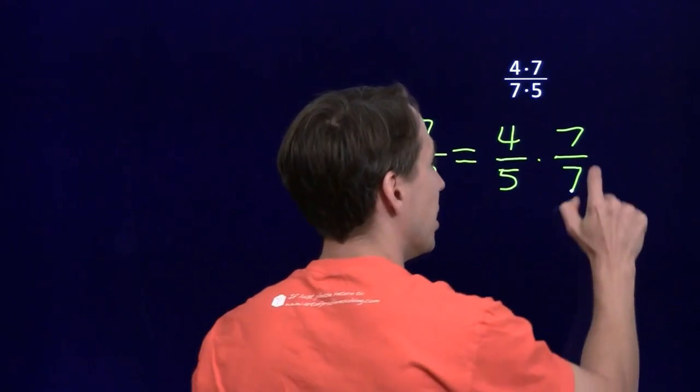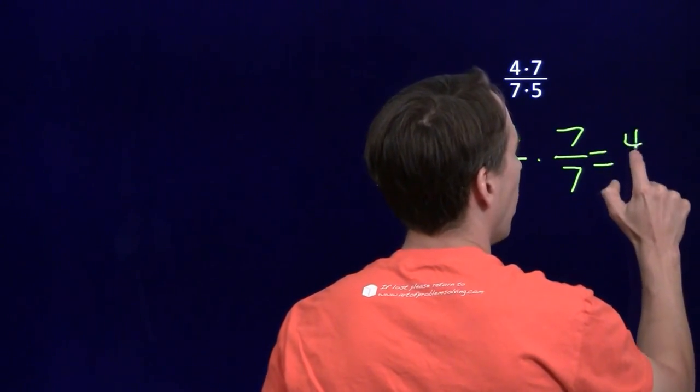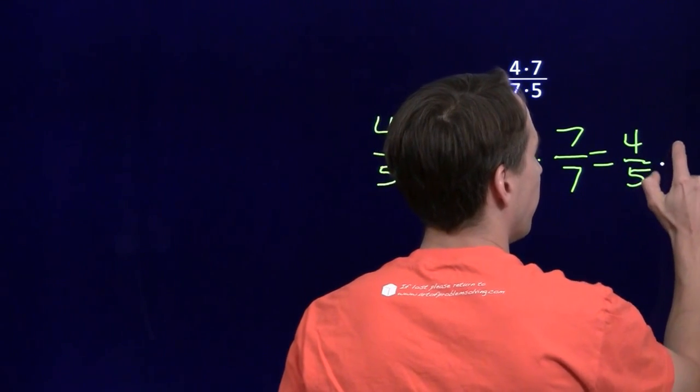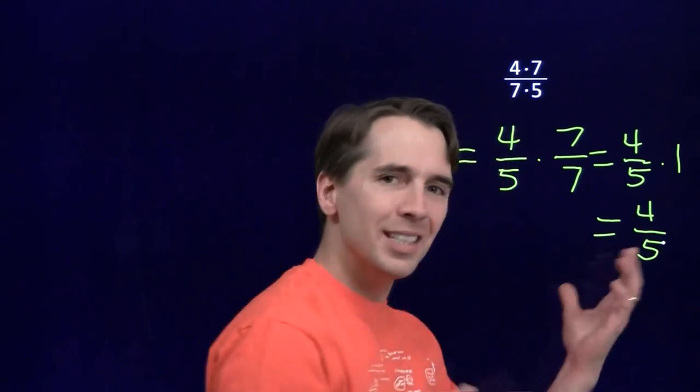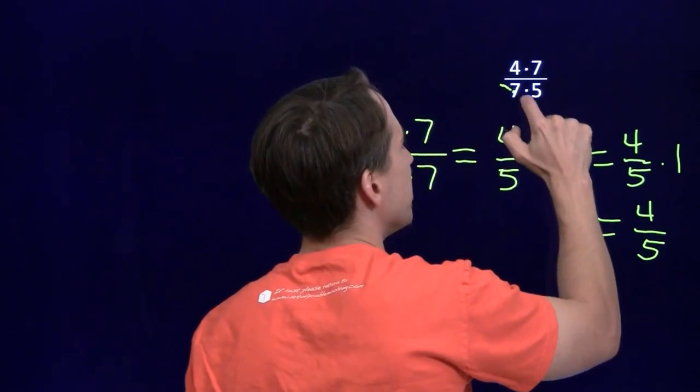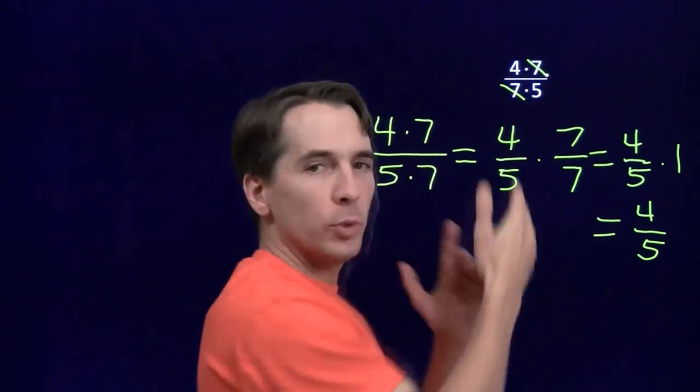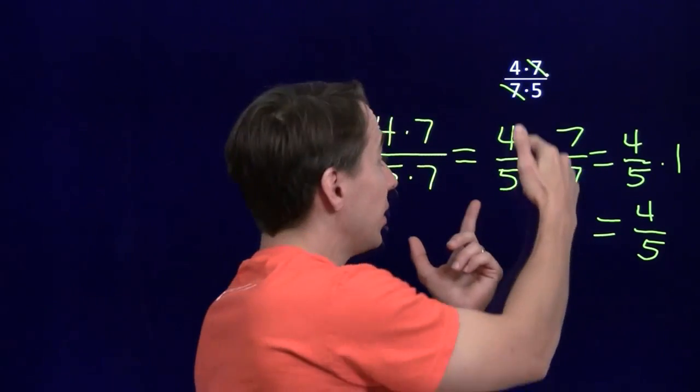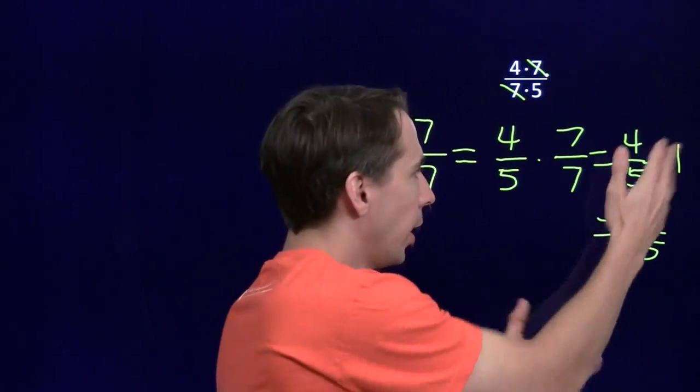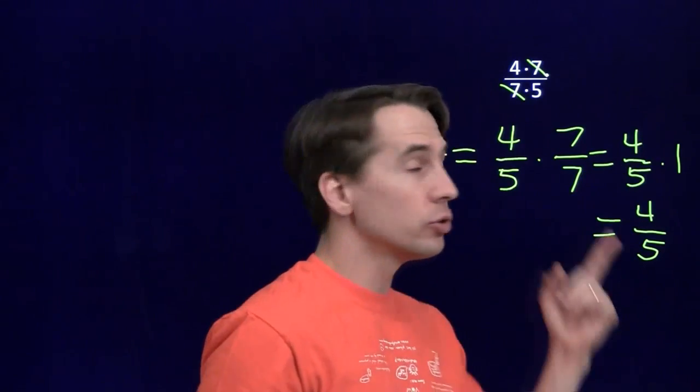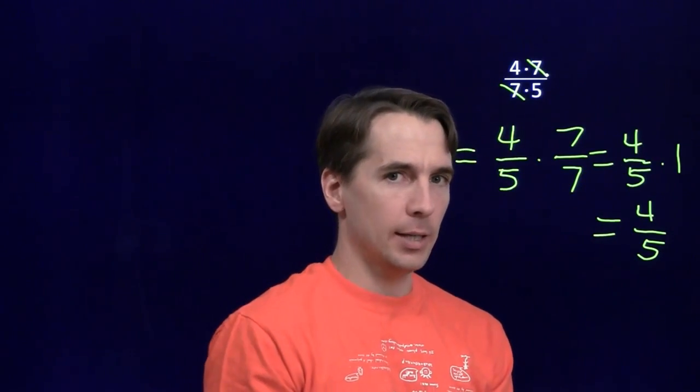Now, of course, 7 over 7, 7 divided by 7, that's just 1. And we get 4 fifths times 1, and of course, that's just 4 fifths. And this is why we can cancel out the 7s. Because I know I can rewrite this as 4 fifths times 7 over 7. That is 4 fifths times the fraction that equals 1. Multiplying by 1 doesn't change anything, so that just goes away. And that's why we can cancel the 7s.